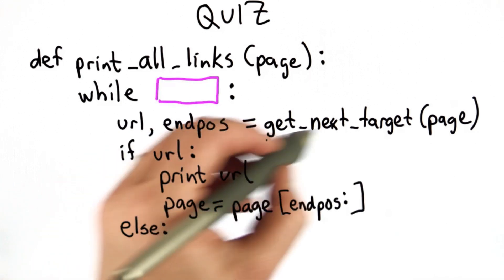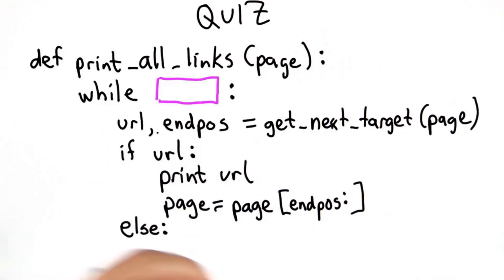If we didn't get a valid URL, well, that means that getNextTarget did not find a link, there were no more links in the page, and we need to do something else. And I will leave blank what we need to do here.